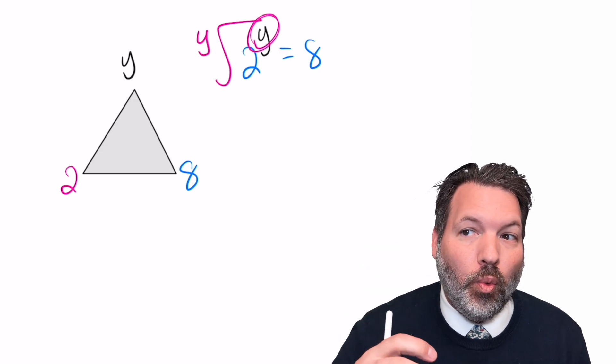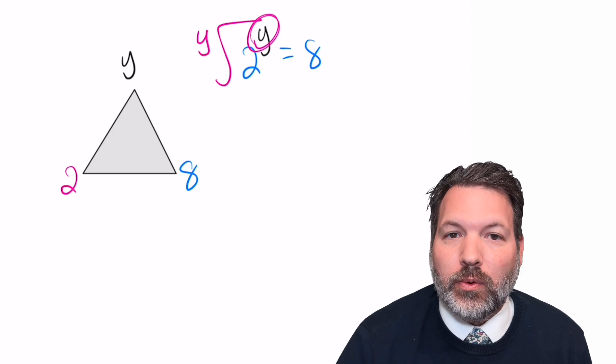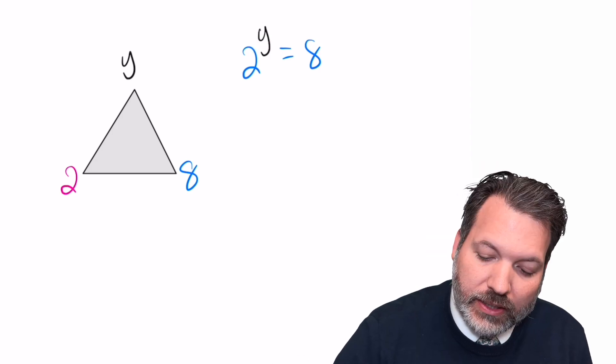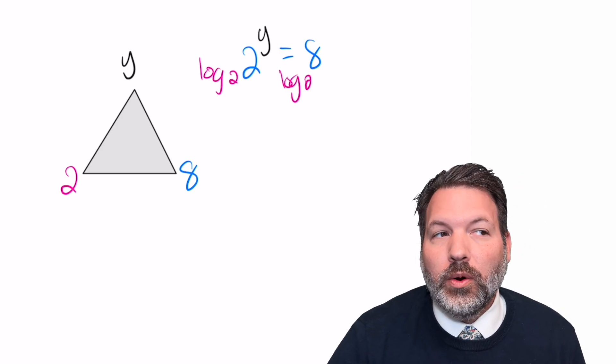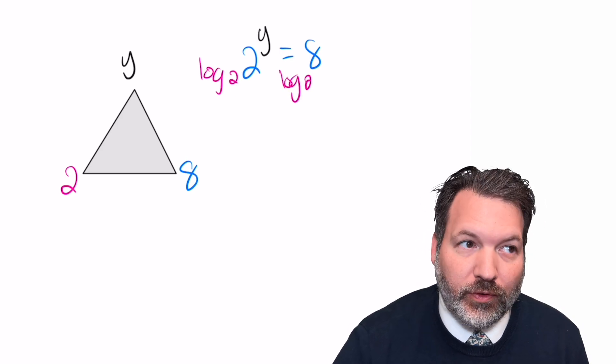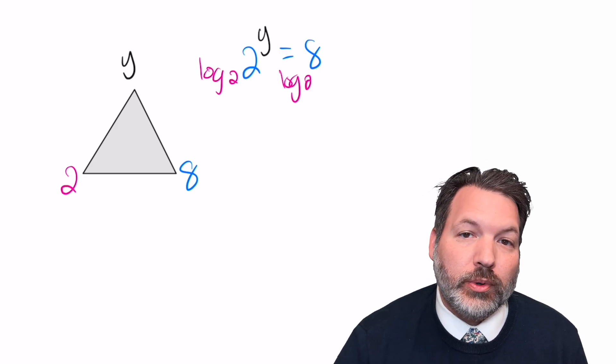I can't take some unknown y-th root of 8 in order to figure out the very thing that I want, which is the missing exponent. Instead, what I have to do is take a logarithm. So this is where the logarithm gets involved. When it's the exponent that's missing from an exponential equation, a logarithm is the inverse that helps us recover that.